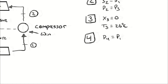At state 3, we have a saturated liquid, so we still use the saturation tables. With a temperature of 26 degrees Celsius given, we again use Table A10. From the 26°C row: pressure P3 = 6.853 bar, enthalpy H3 = 85.75 kJ/kg, and entropy S3 = 0.3208 kJ/(kg·K) — though S3 is not needed for this analysis.